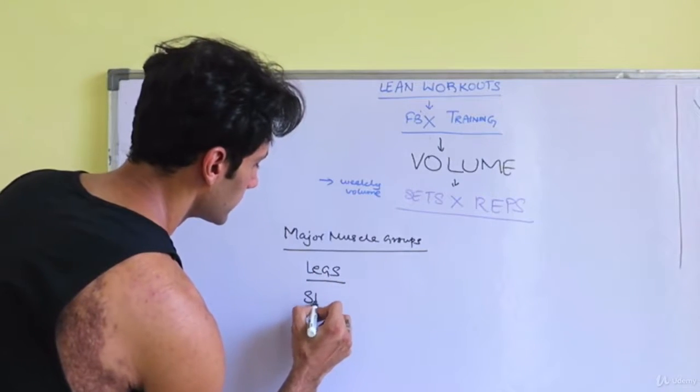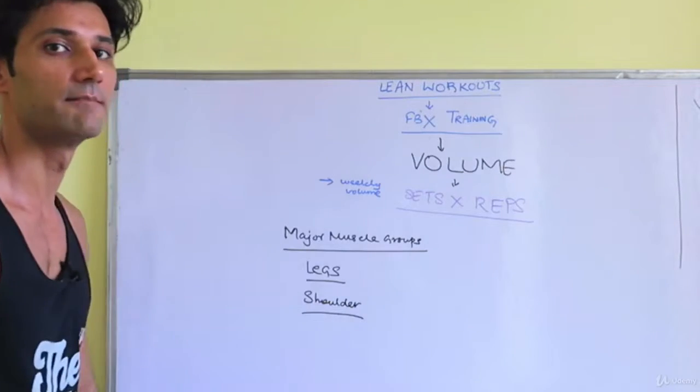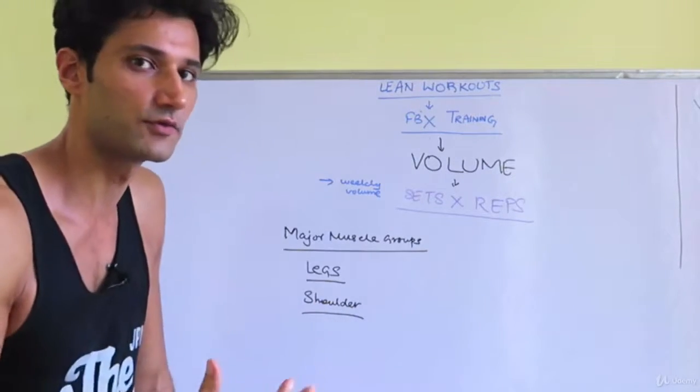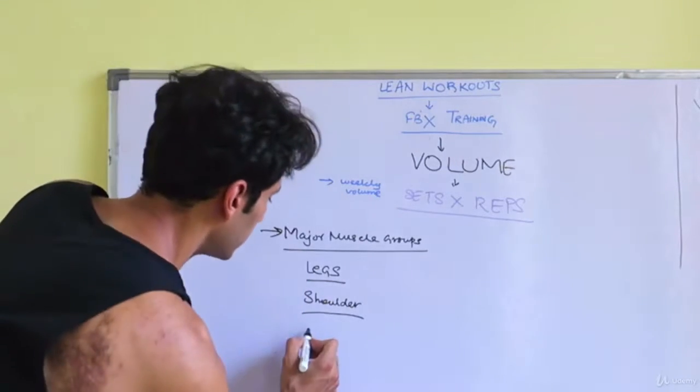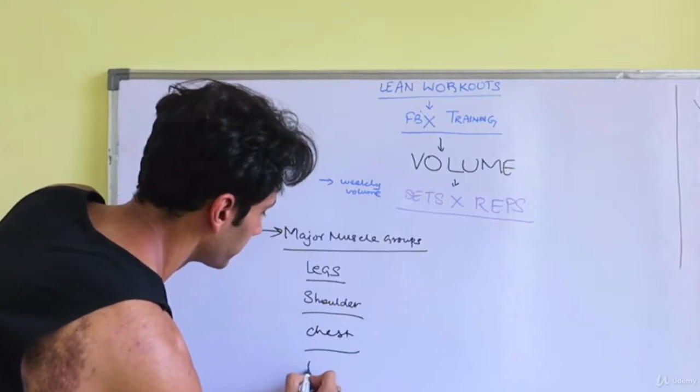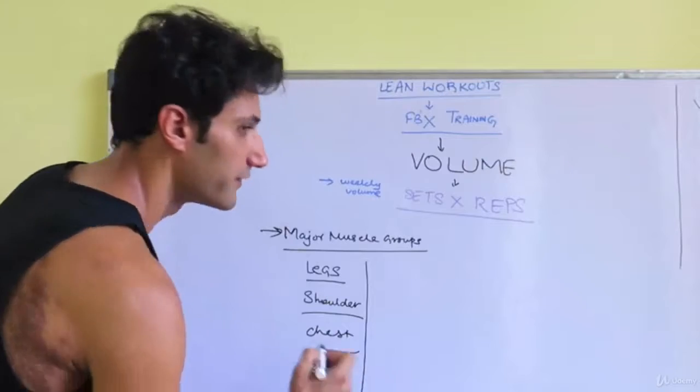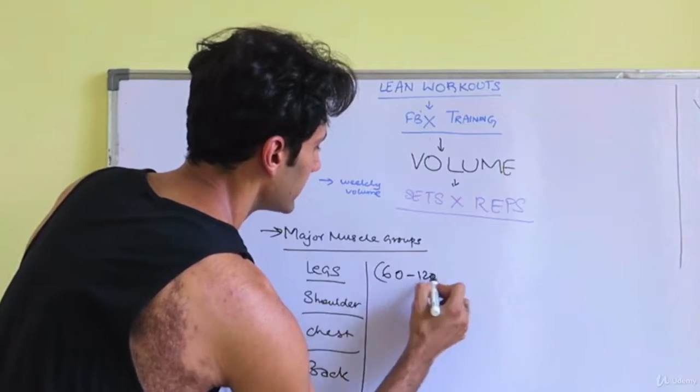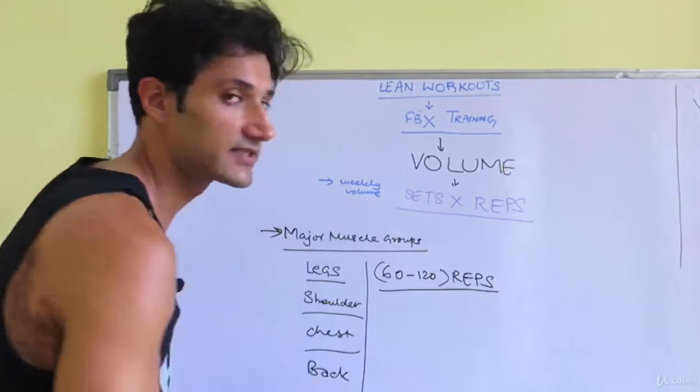Then there's chest and back. These are your major muscle groups. The weekly volume should be between 60 and 120 repetitions every week. 60 to 120 repetitions is the volume that gives you the best physique and helps you build a really good body.